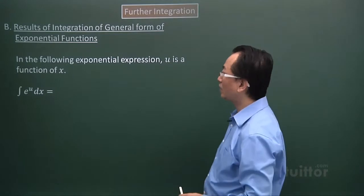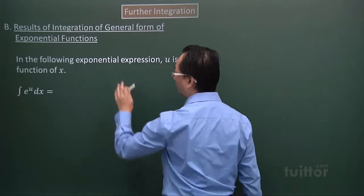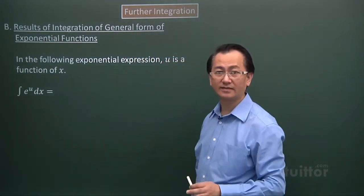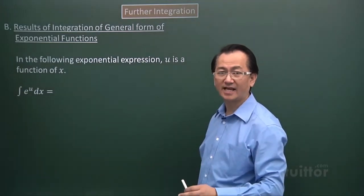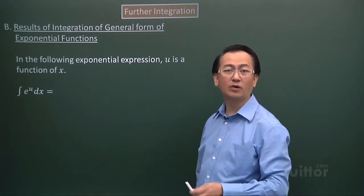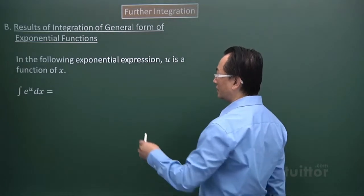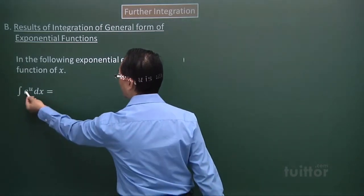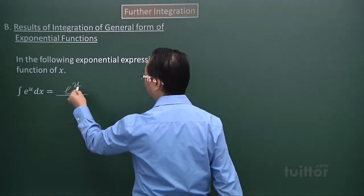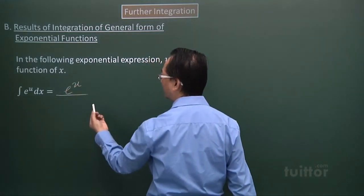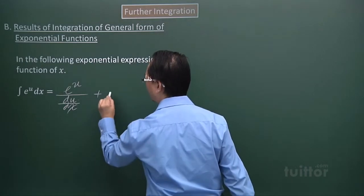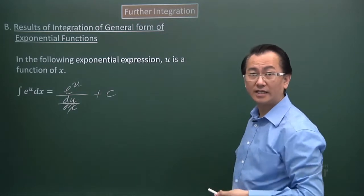For part B, we look at the result of integration of the general form of the exponential function. I make it general: e to the power of u, where u is a function of x — it can be anything, such as a trig function like sine x, a log function like log 2x, or even a monomial or polynomial expression. In general form, the integral becomes e to the power of u divided by du/dx, plus the arbitrary constant C for indefinite integration.